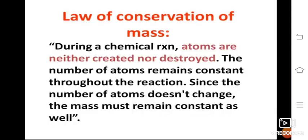Law of conservation of mass in detail: the amount of reactants taken must equal the amount of products. For example, if water and sugar are each 50 grams, the product will be 100 grams of solution. The reactants' weight and products' weight must be equal. During a chemical reaction, atoms are neither created nor destroyed — the number of atoms remains constant throughout the reaction, so the mass must remain constant as well.